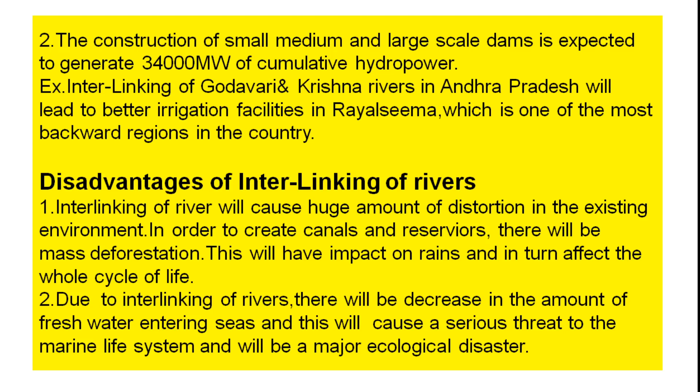6. The interlinking of rivers will cause a huge amount of distortion in the existing environment. In order to create canals and reservoirs, there will be mass deforestation. 7. This will have an impact on the ecosystem and in turn affect the whole life cycle.